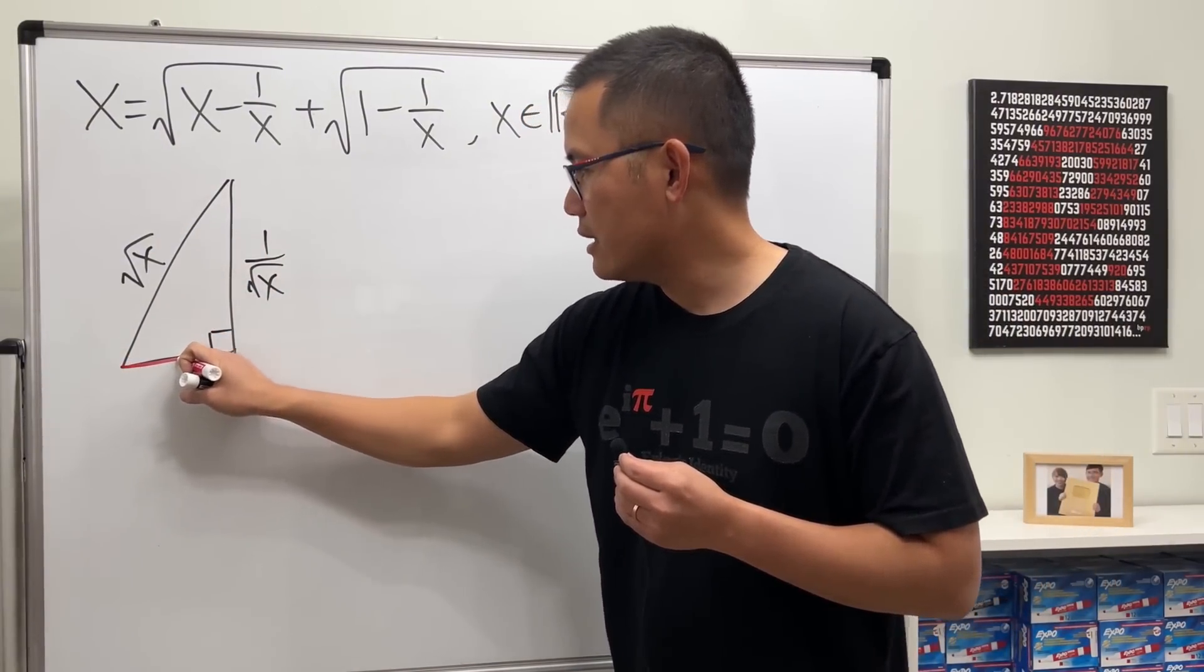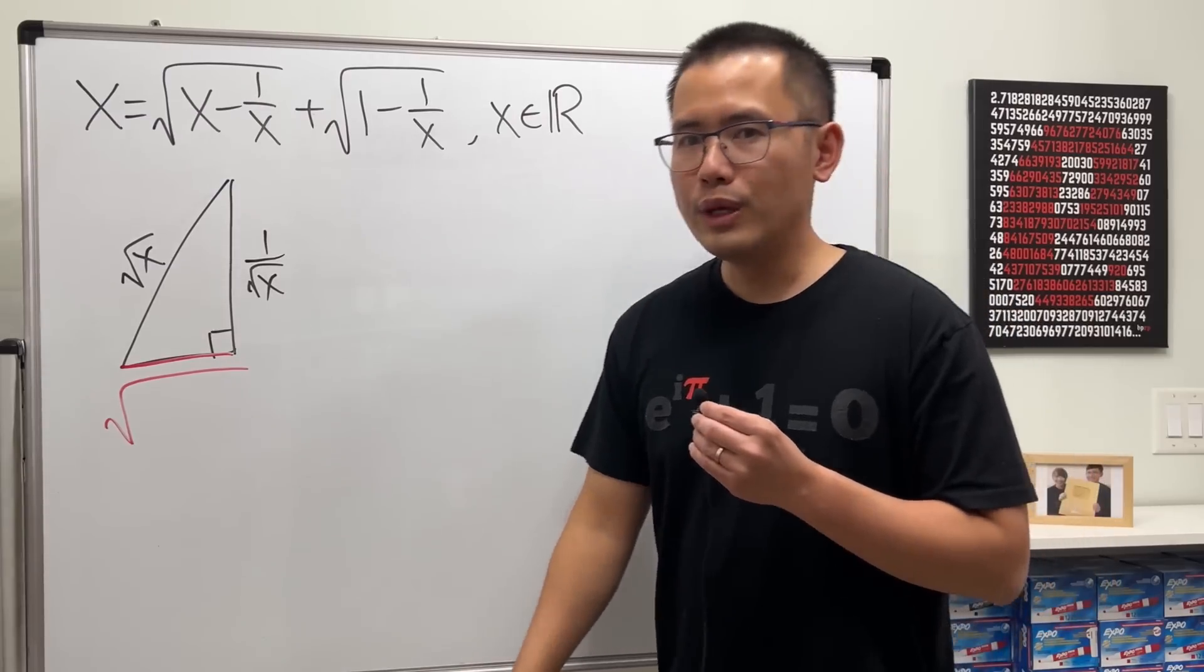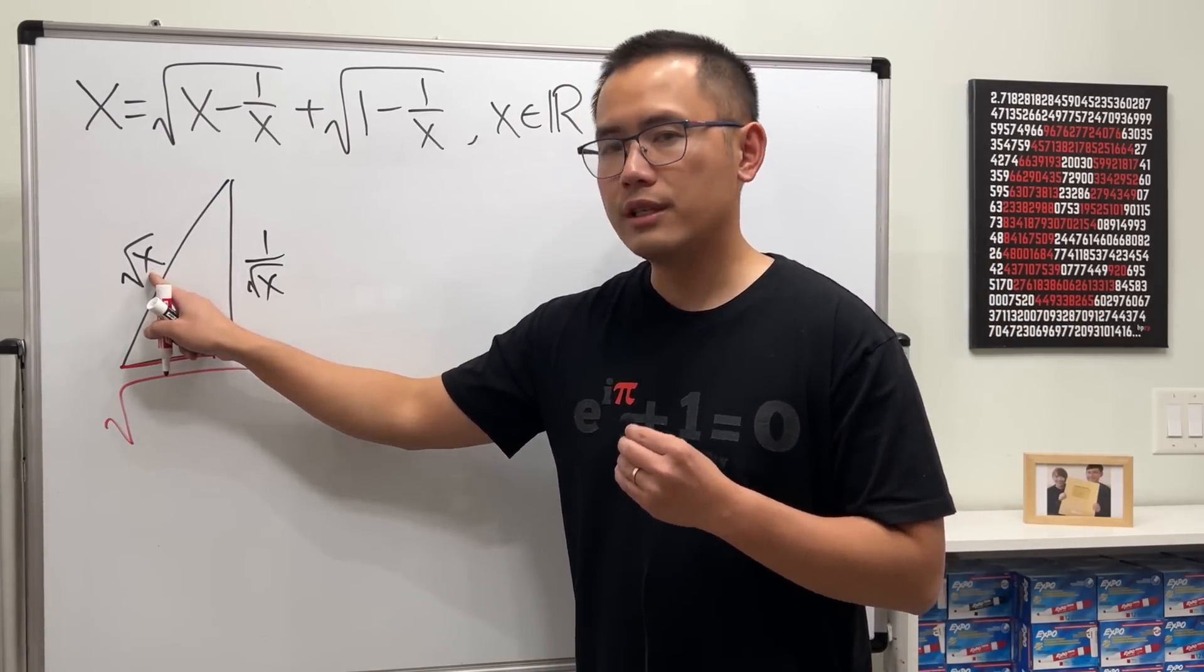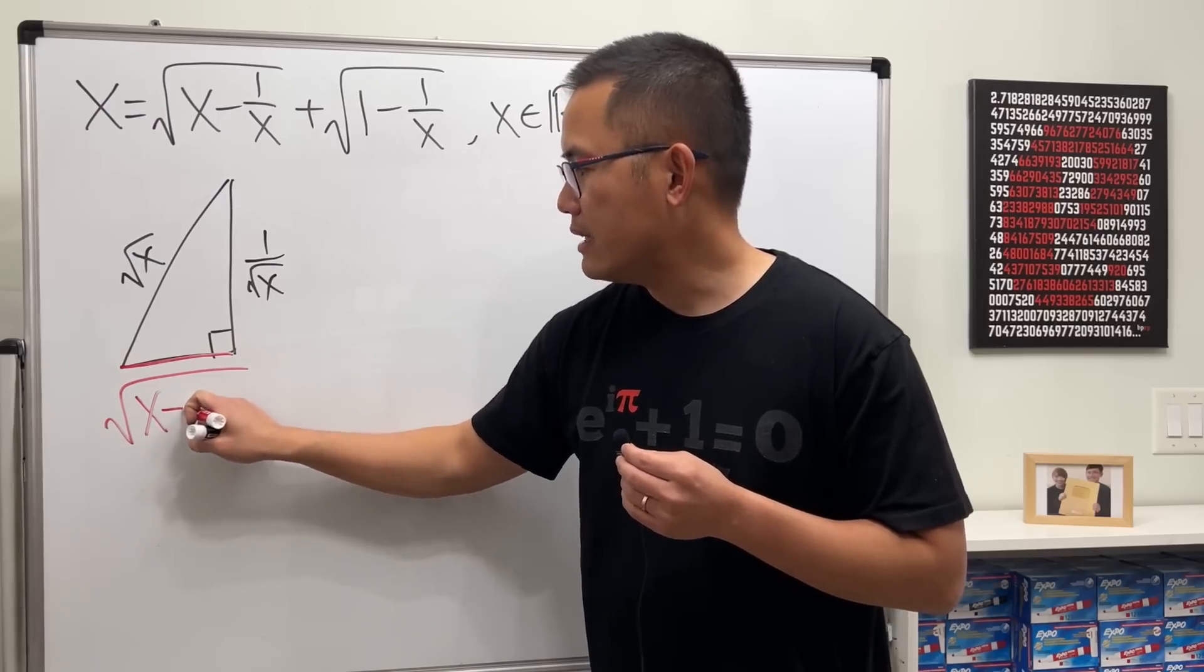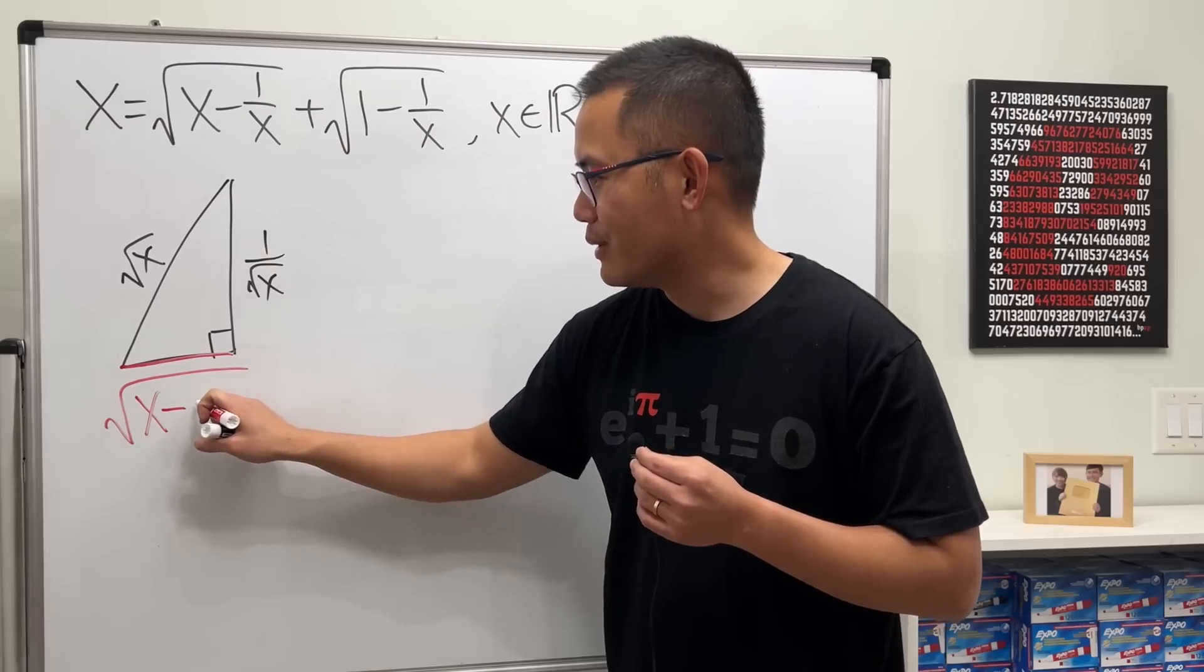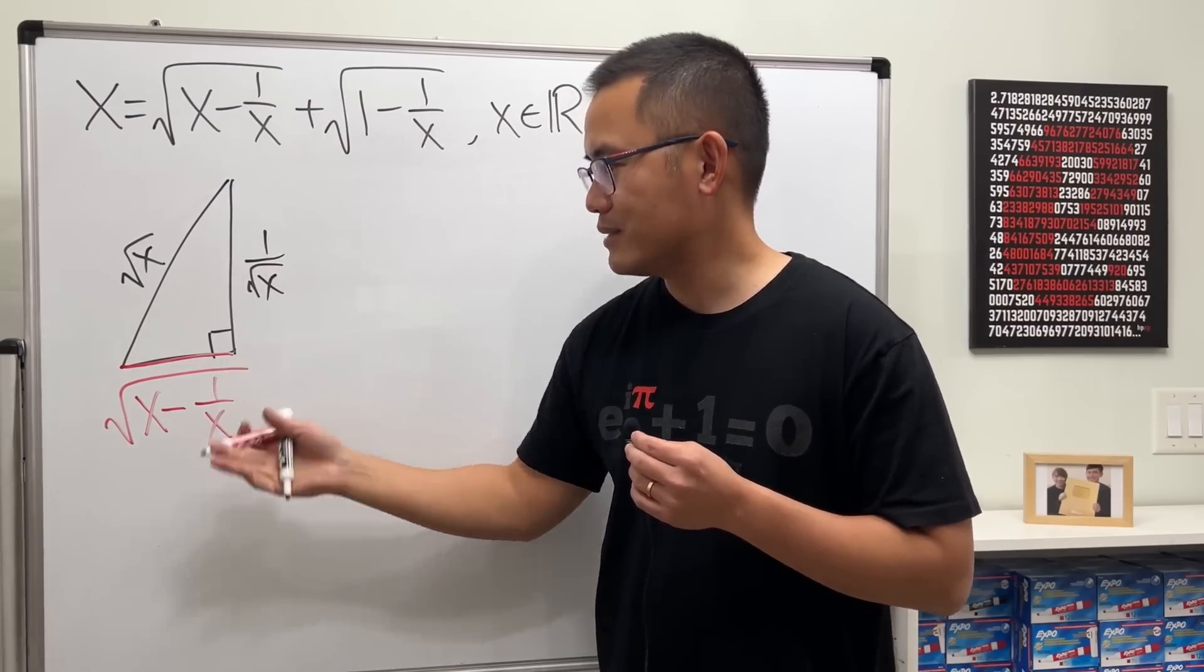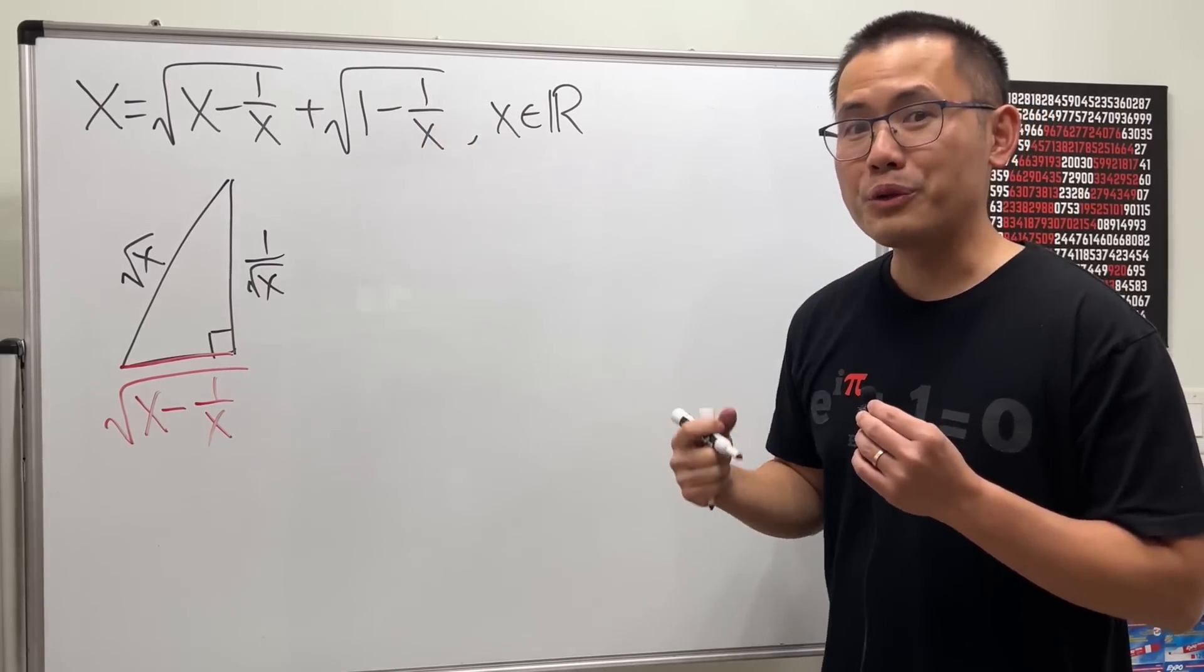We first open the square root, and all we have to do is: the hypotenuse squared, square and square root cancel, so just have x minus this side squared, and square root square cancel, so we just have 1/x. Just like that. Now for the other one, we are going to do the same thing.